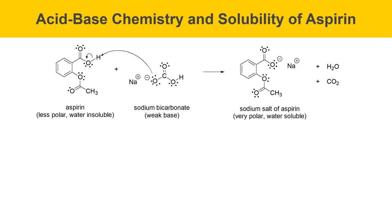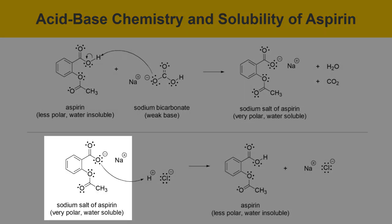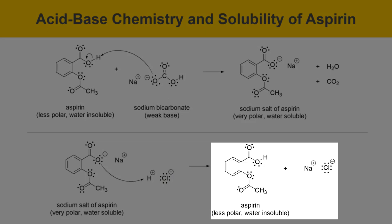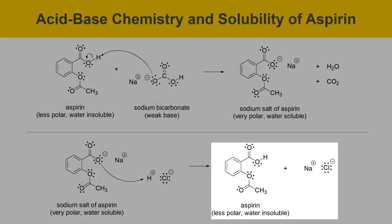It's possible to go the other way too. If you have the sodium salt of aspirin and want to convert it back to its neutral form, add an acid to reinstall the proton. The sodium salt of aspirin, which is very polar and water-soluble, is treated with HCl. The negatively charged oxygen of the sodium salt grabs a proton off the HCl, producing neutral aspirin — which is less polar and water-insoluble — along with sodium chloride.